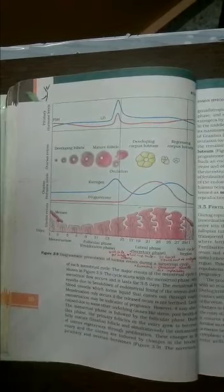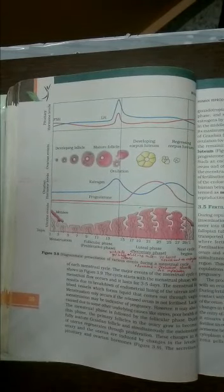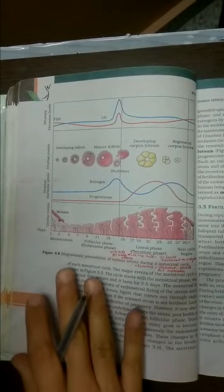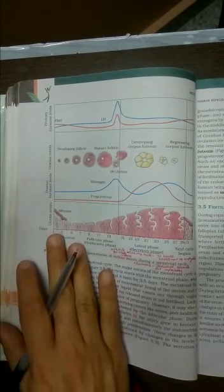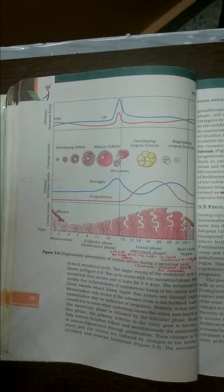So this is all about the menstrual cycle. Please remember this process starts when a female enters puberty, and the first time when it happens it is called menarche.